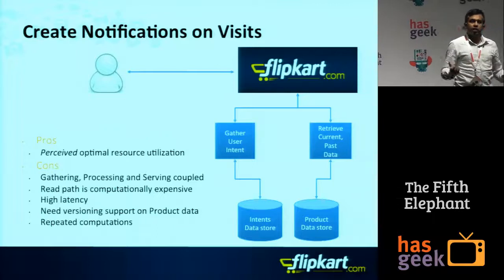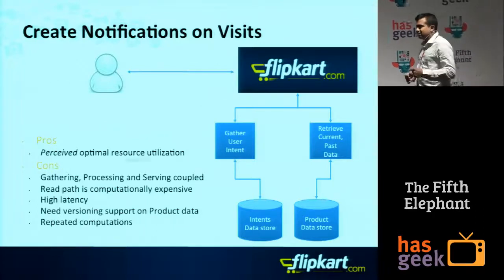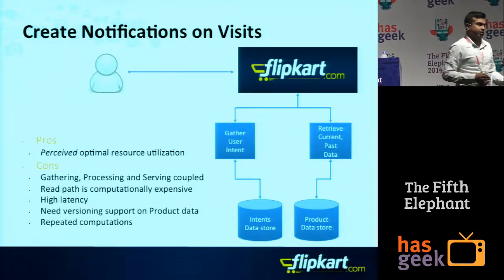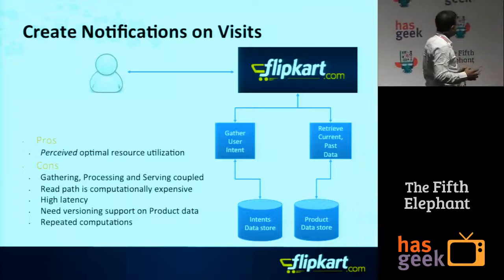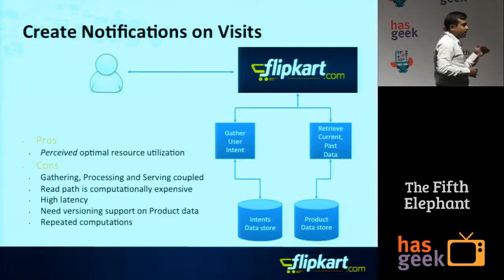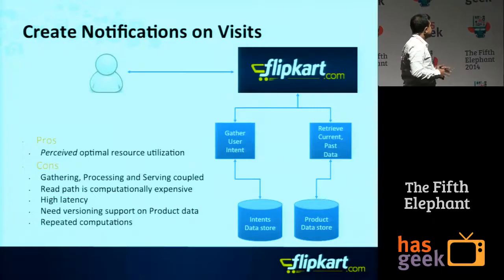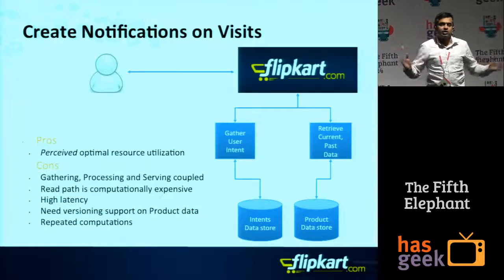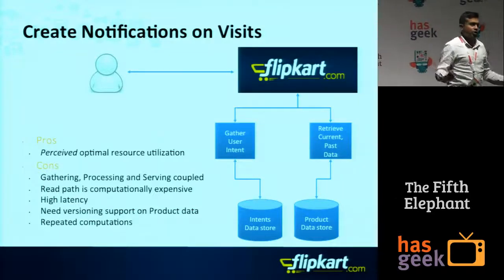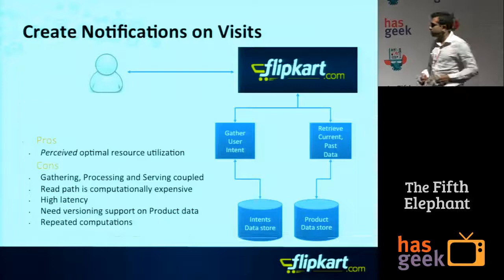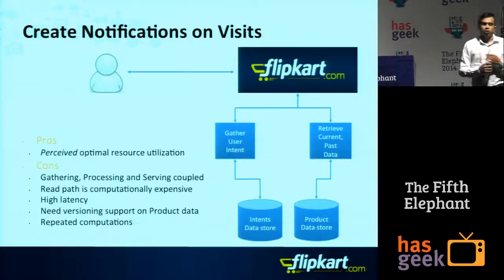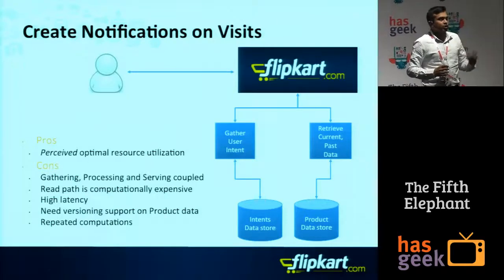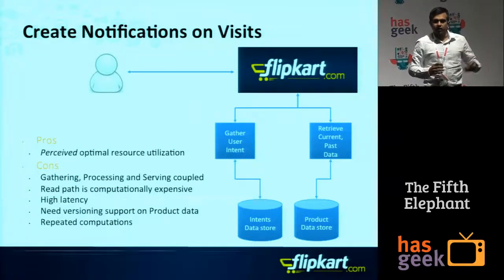When a user logs on to Flipkart, maybe he's going to spend a couple of seconds on the homepage. If you don't show the notification, he's probably navigated away — you want it to be extremely fast. The read path is computationally expensive and high latency. You also need versioning support in product data because everyone has seen it at different points in time. And for a really popular product, there might be hundreds of people who've seen it — you'd be computing this again and again.